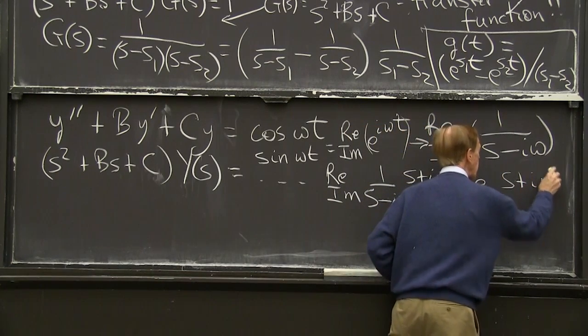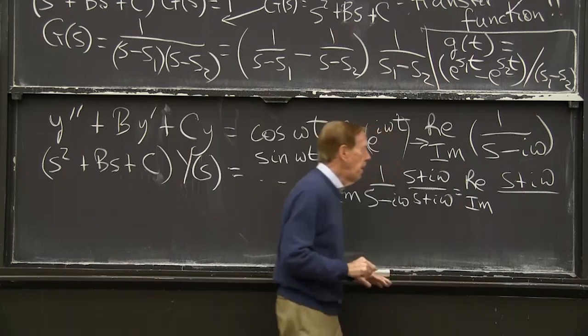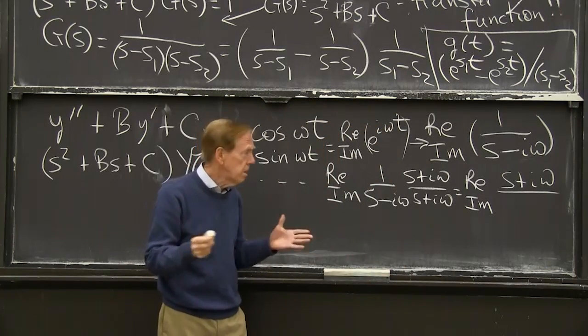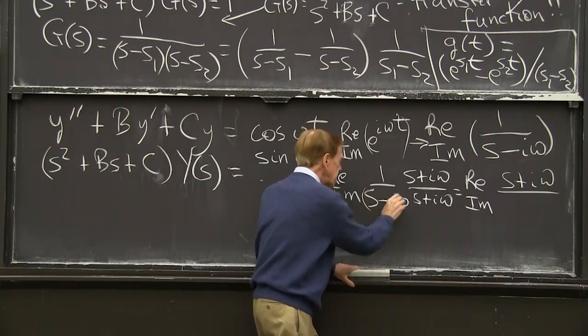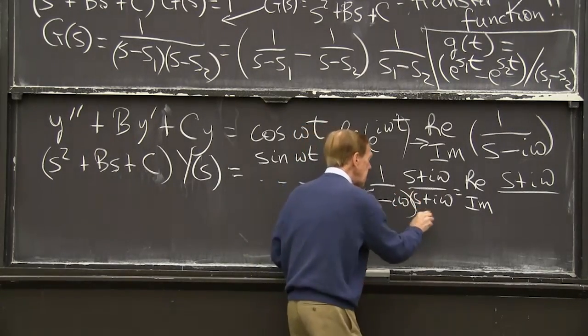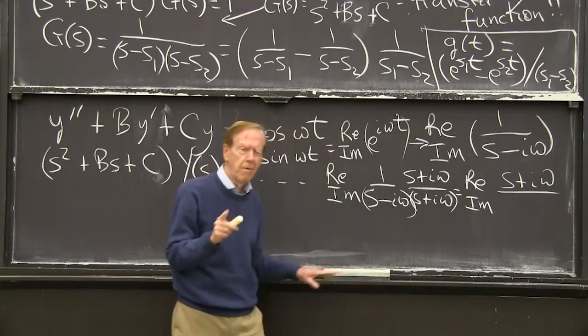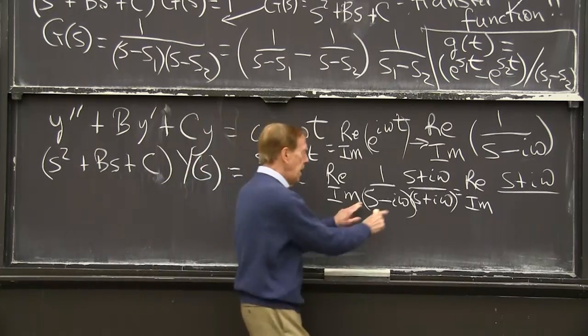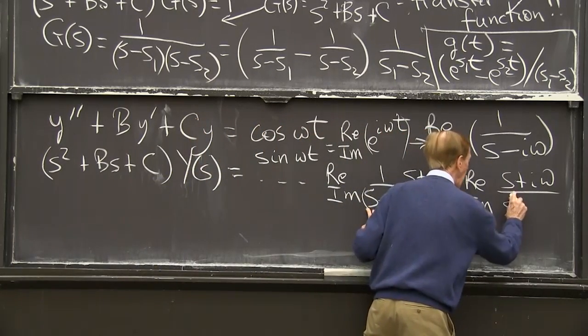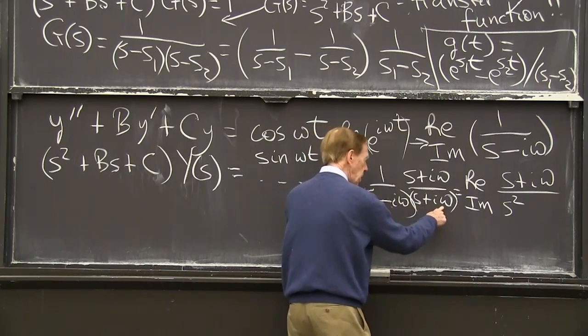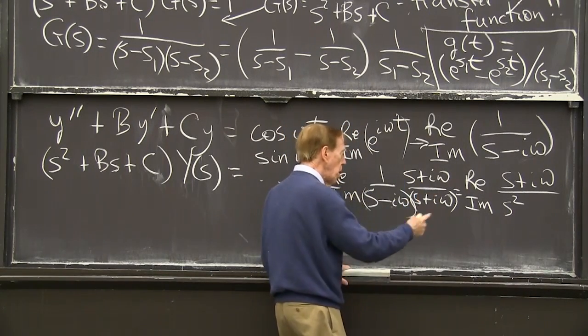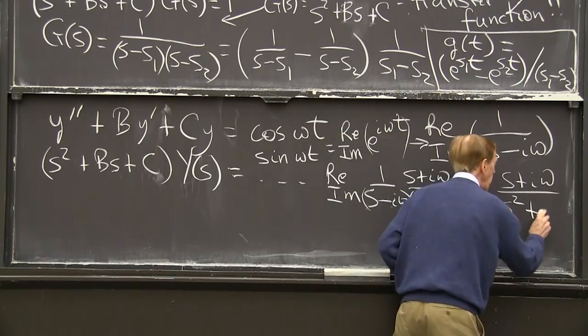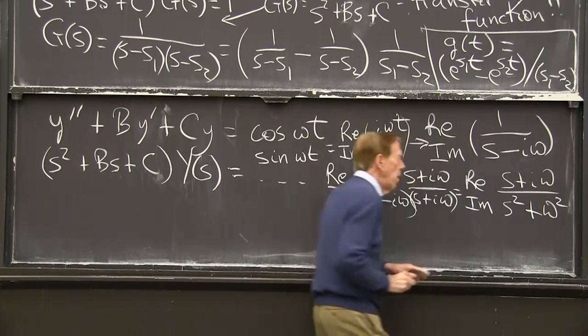But you see, what's happened now is real and imaginary parts of, I've got what I want. s plus i omega is now up in the numerator, where I can see it. And what do I have down below? s minus i omega times s plus i omega, the very important quantity, s squared minus i omega s plus i omega s minus i squared plus 1 omega squared, plus omega squared. We've done it.